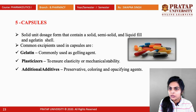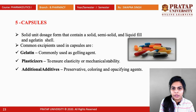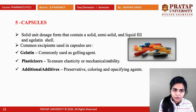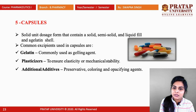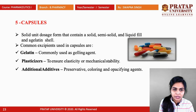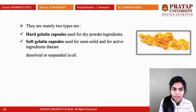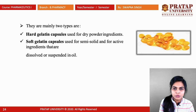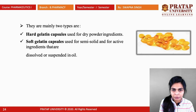Capsules are a solid unit dosage form similar to tablets. They contain solid, semi-solid, or liquid fill enclosed in a gelatin shell. Common excipients used in capsules include gelatin (as a gelling agent), plasticizers (to ensure elasticity and mechanical stability), and additional additives like preservatives, coloring agents, or opacifying agents. Capsules are mainly of two types: hard gelatin capsules (used mostly for dry powder or granule filling) and soft gelatin capsules (used for semi-solid and liquid preparations, where active ingredients are dissolved or suspended in oil).